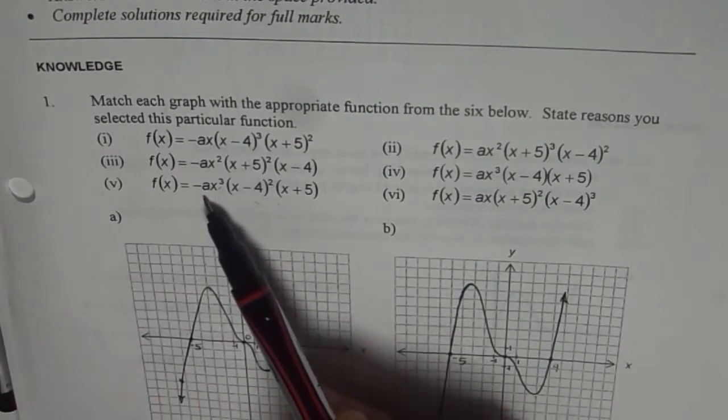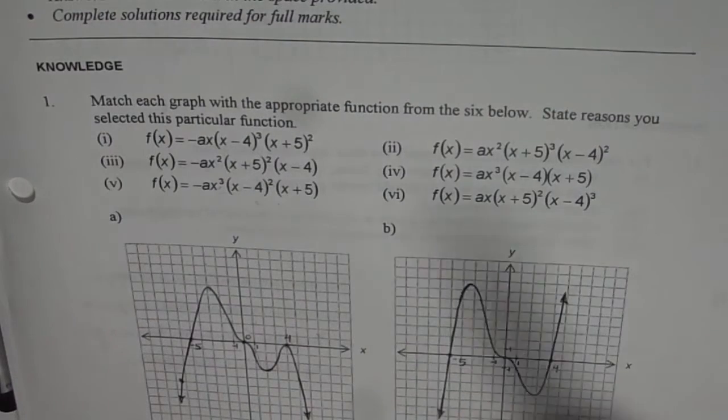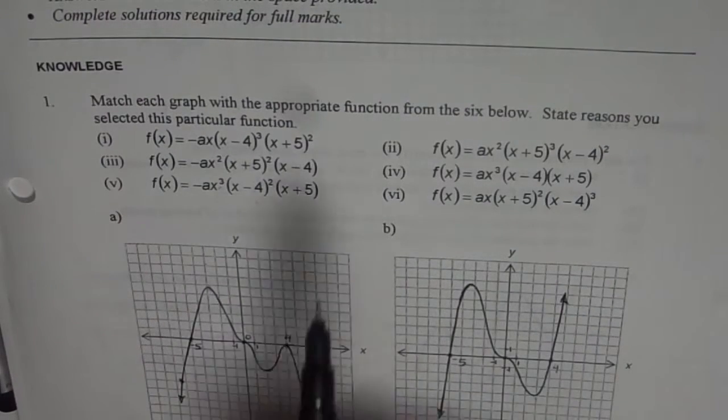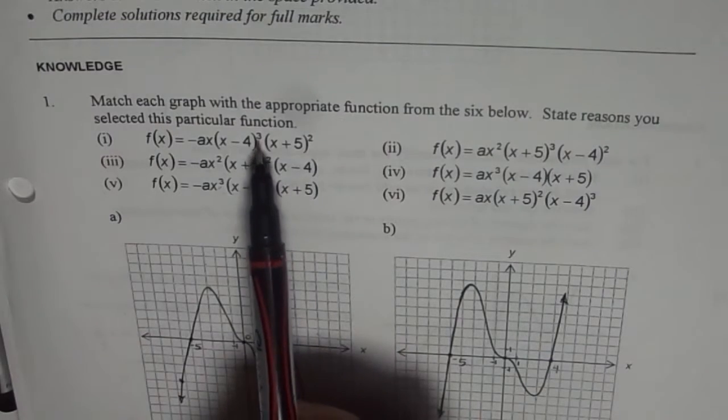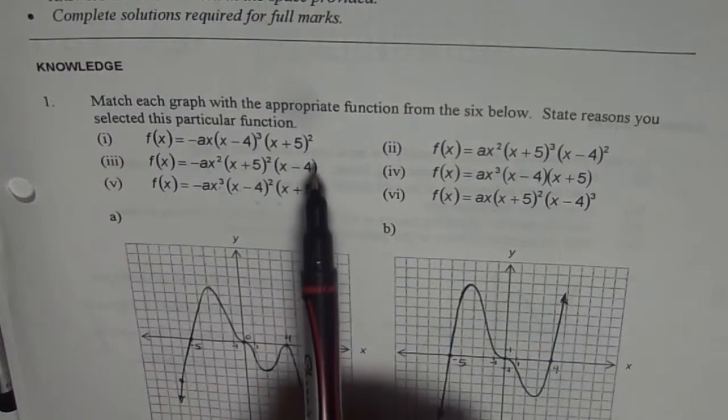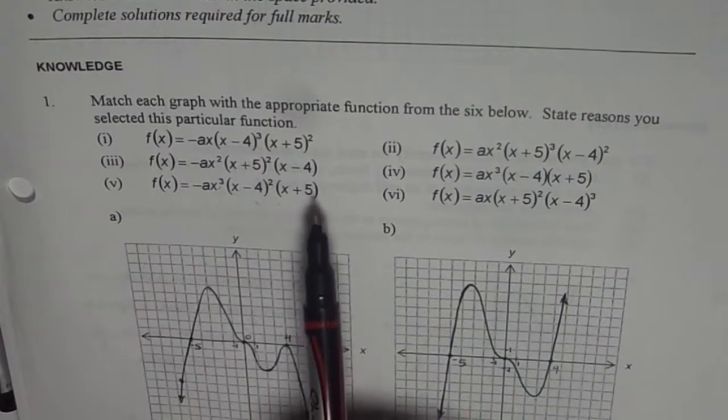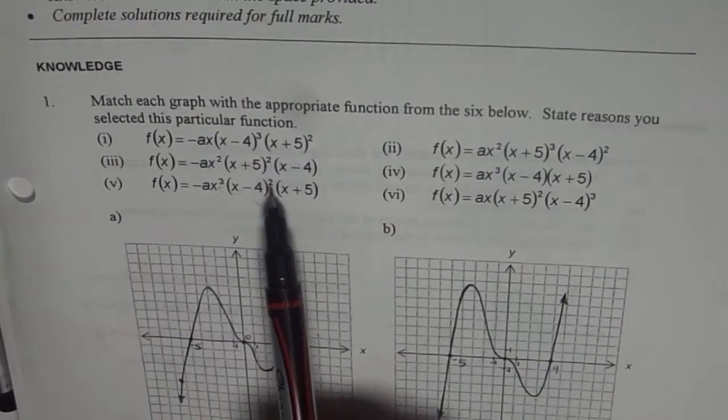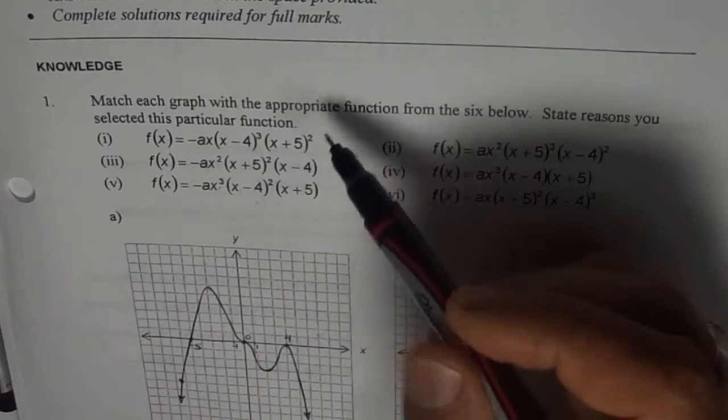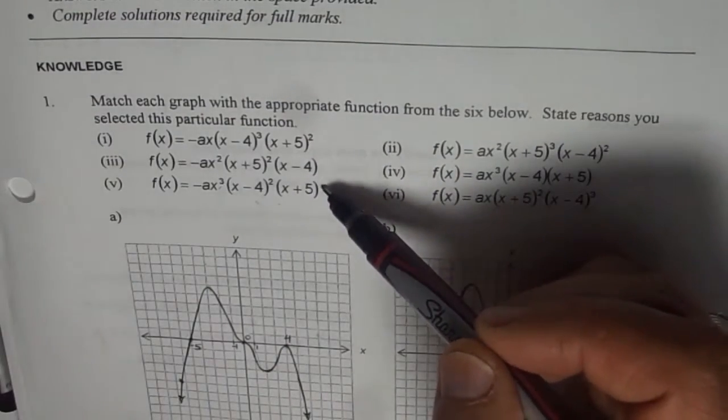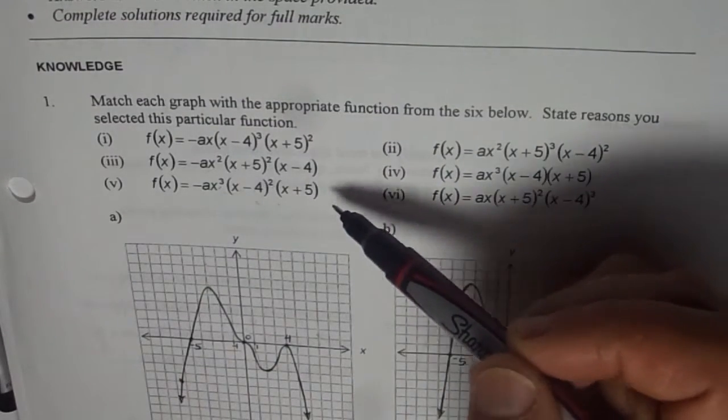All of them are negative leading coefficients. And then let us count the degree. So it is 2 plus 3, 5 plus 1, 6. That is even. 1 plus 2 is 3, 3 plus 2 is 5. That is odd. This is 1 plus 2 is 3, 3 plus 3 is 6. That means the answer could be from these two. Now which one is the correct?